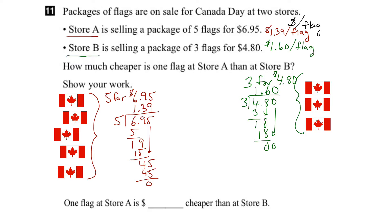Now we want to know how much cheaper store A is than store B, so we subtract the two unit costs: $1.60 per flag minus $1.39 per flag. We borrow one — ten minus nine is one, five minus three is two, one minus one is zero. So store A is 21 cents cheaper than store B in terms of the cost for one flag.